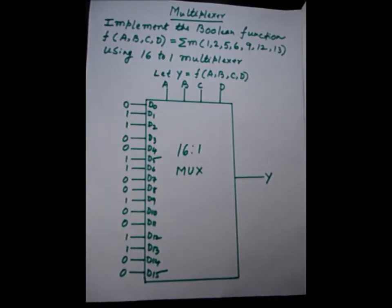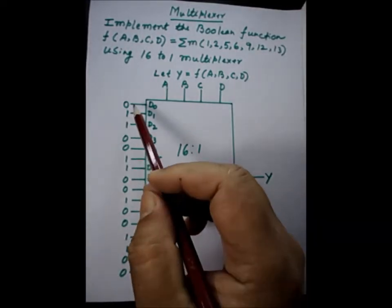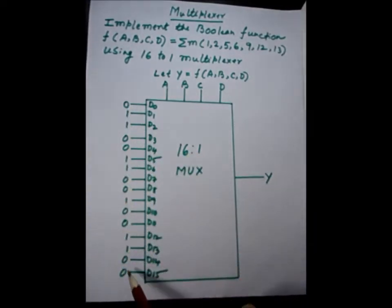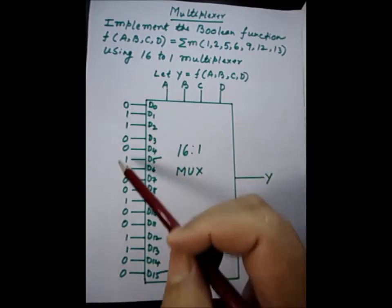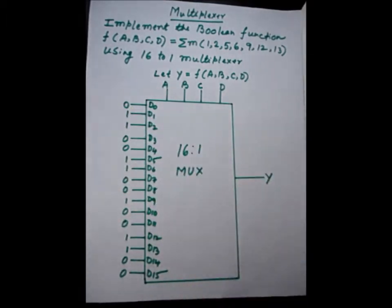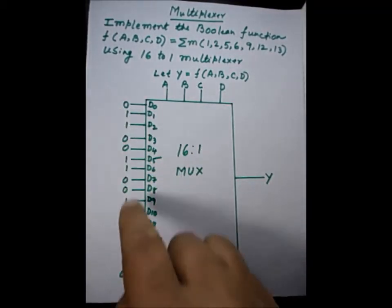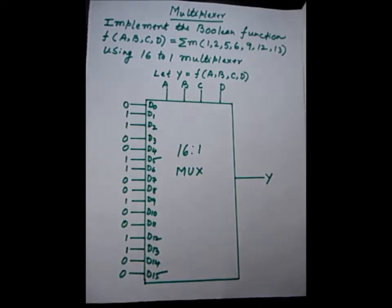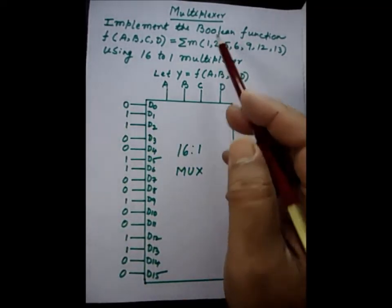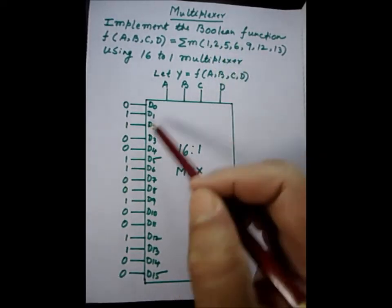The reason I used the truth table example is to explain why we are assigning 0 and 1 to the data inputs and why we are making those specific assignments. That is why I showed it with the help of the truth table. But if you want to do it very fast, you can use the shortcut method I described.